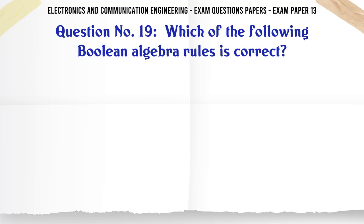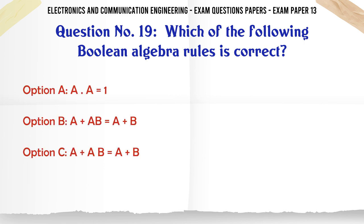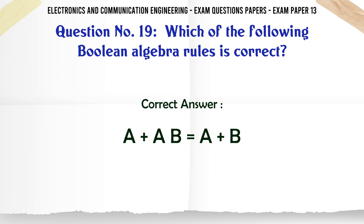Which of the following Boolean algebra rules is correct? A: A dot A = 1, B: A + AB = A + B, C: A + AB = A + B, D: AA + B = B. The correct answer is A + AB = A + B.